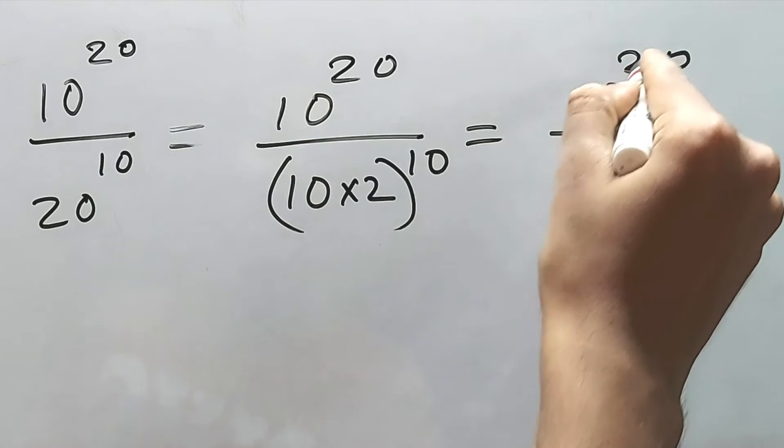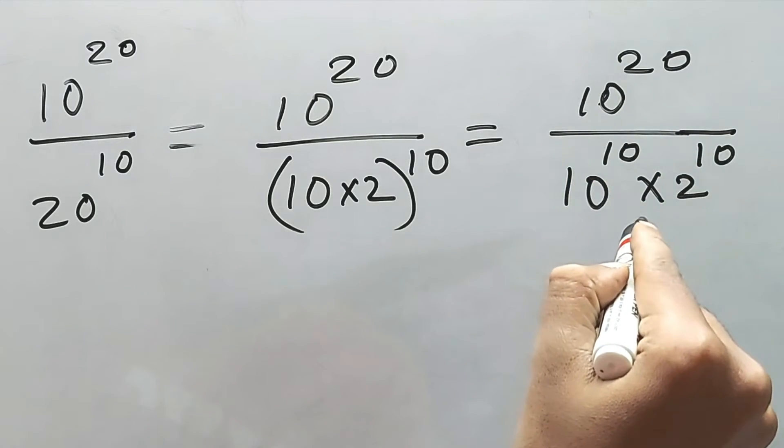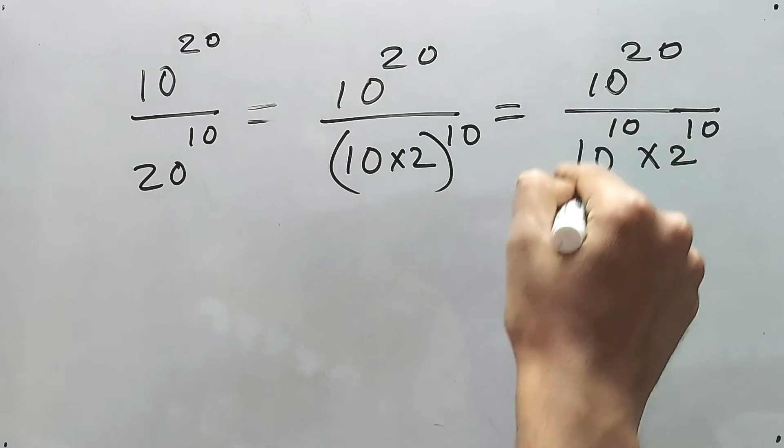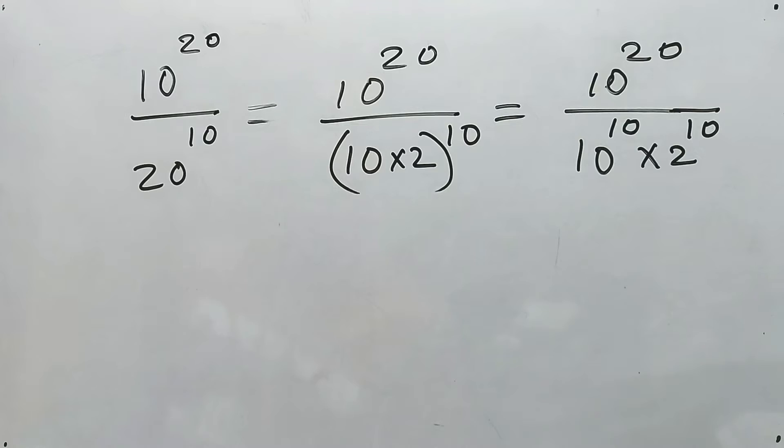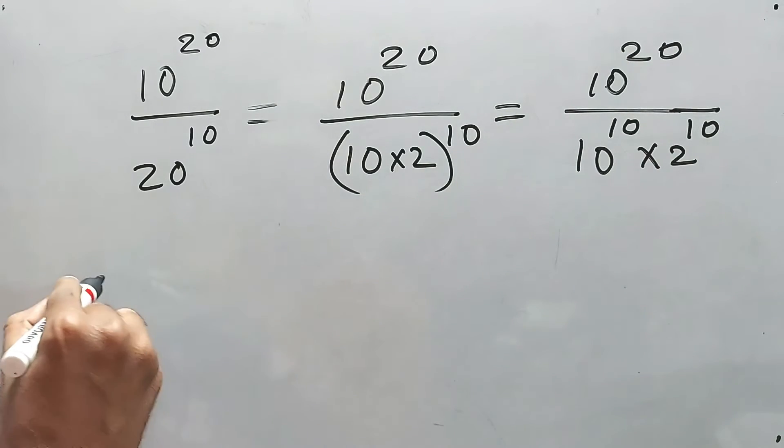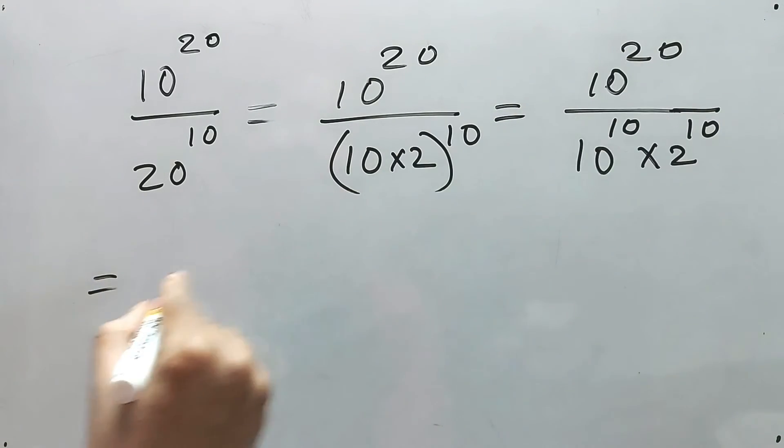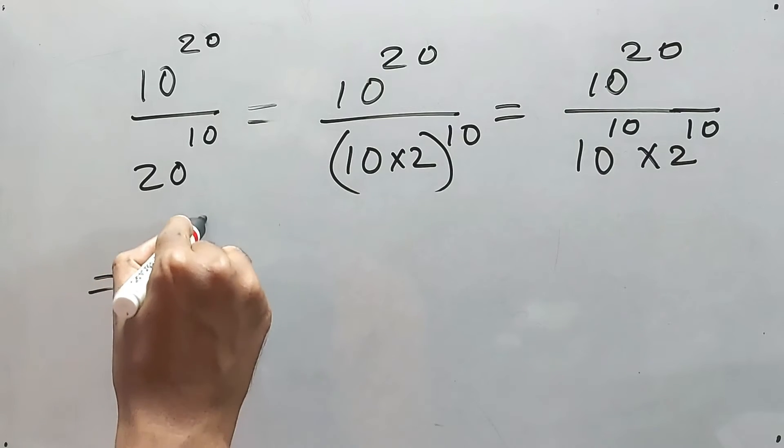Clear? Now 10 to the power 20 divided by 10 to the power 10, we know this, right? How to solve this? 20 minus 10. It will be subtracted directly, so it will be 10 to the power 10.